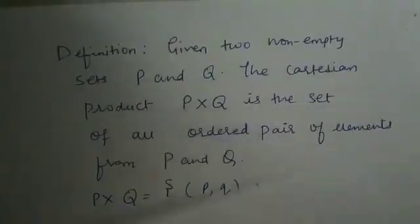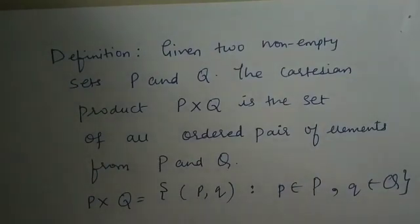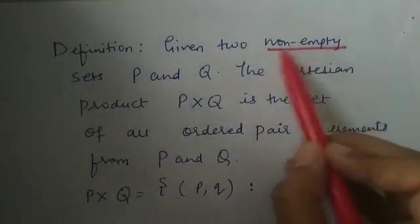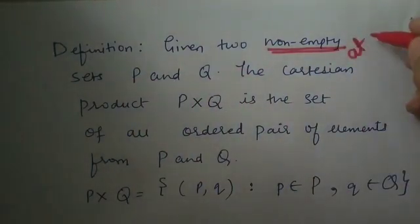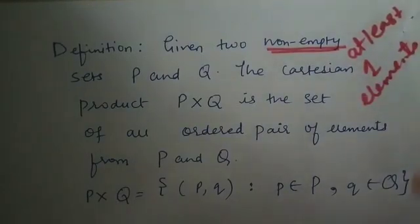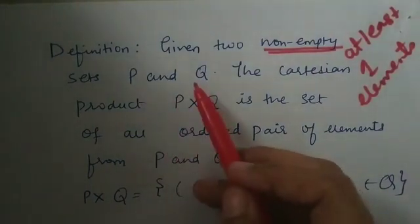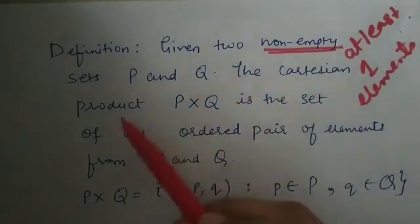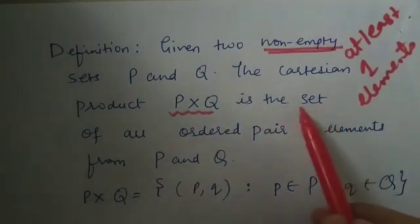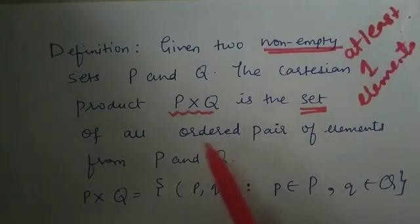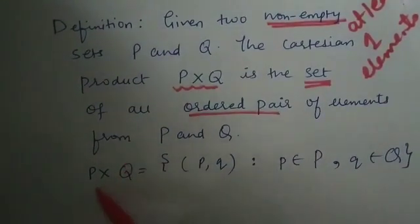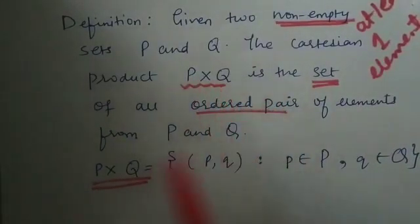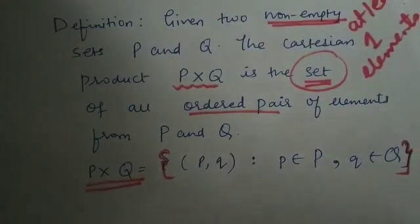Now let us strengthen the concept with the mathematical definition of Cartesian product. Given two non-empty sets — non-empty means each set should have at least one element — the Cartesian product P × Q is the set of all ordered pairs of elements coming from P and Q. More elements are allowed, but the minimum is one element per set. The Cartesian product P × Q is denoted using curly braces containing all ordered pairs.